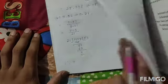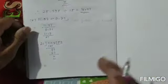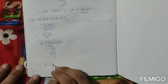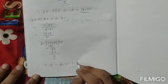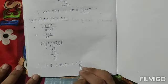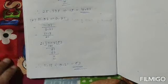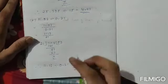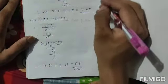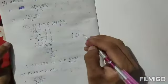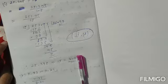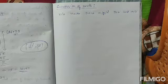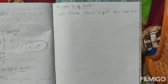So 11.13 divided by 0.21 equals 53. That is the answer. In this way you have to do division of decimals. Question numbers j and l are your homework. Now we will move to the next topic, which is conversion of units, on page numbers 60 and 61.